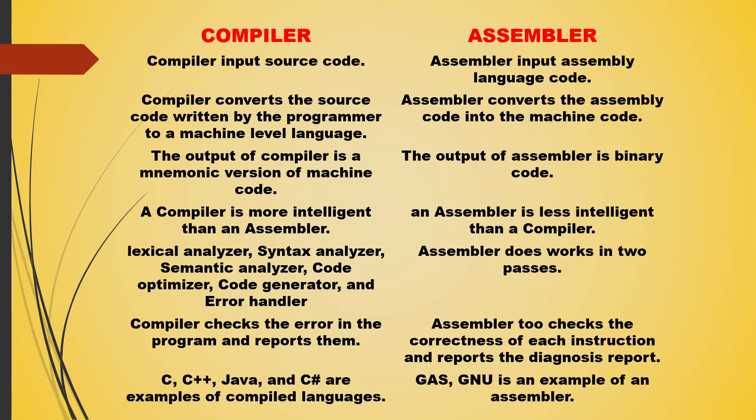Lexical analyzer, syntax analyzer, semantic analyzer, code optimizer, code generation, and error handler are the phases of a compiler, while the assembler works in two phases.